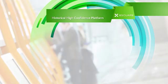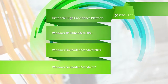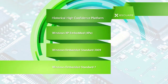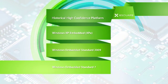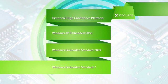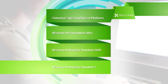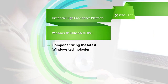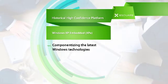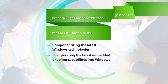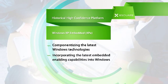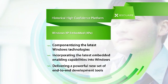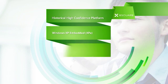Historical High-Confidence Platform – Windows Embedded Standard 7 is an established, high-confidence platform. In 2001, Microsoft released Windows XP Embedded, also known as XPE. This was the componentized version of Windows XP Professional. The development of XP Embedded was focused on componentizing the latest Windows technologies so that embedded developers could have easy access to the richest feature set possible, incorporating the latest embedded enabling capabilities, and delivering a powerful new set of end-to-end development tools to enable a more efficient and streamlined development process, all while achieving a reduced footprint.